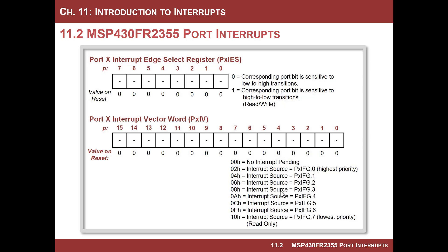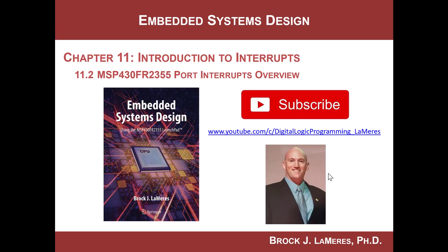For example, if bit position one and two both fired at the same time, the value you'd see in PXIV would be the higher priority — so 0x04 would be in the register. You'd have to accept its prioritization if you wanted to use it. You'd check it, see 0x04, know bit one triggered — handle that code — reading it clears it and it resets to the next value 0x06, then you come back and handle 0x06. That's a general overview of the port interrupt system. At this point we know all we need to know to actually do an example program, which we will do next. Remember to support the channel by subscribing.